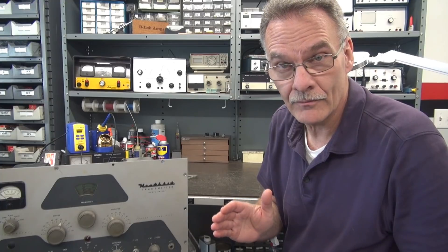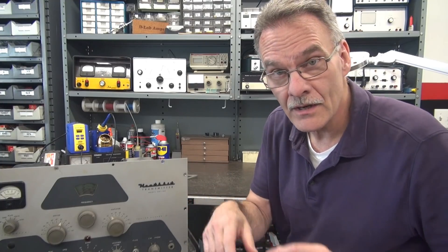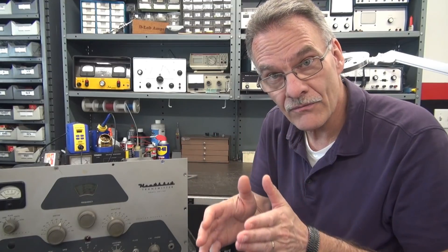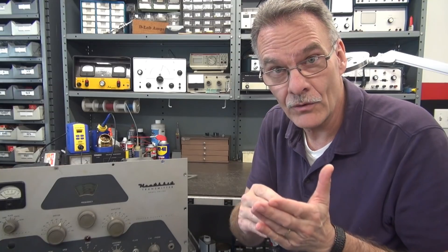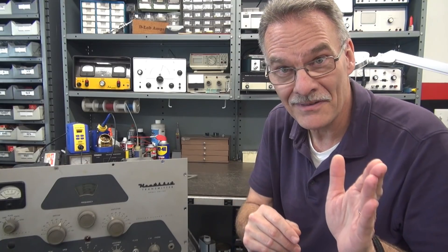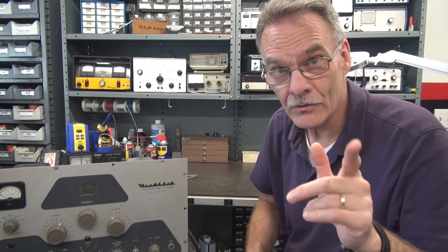This is a common problem with a lot of these older transmitters because what happens is you get the contaminants that fall down onto the chassis. It gathers around the tube. The high voltage says, hey, I see a path to ground. They arc. You've got a problem. I'm going to show you how to fix it.